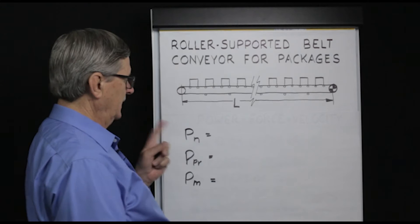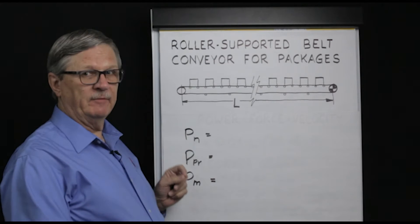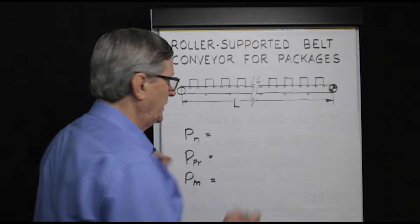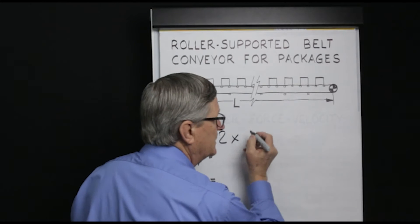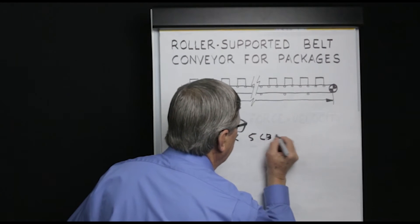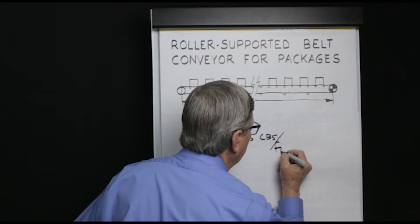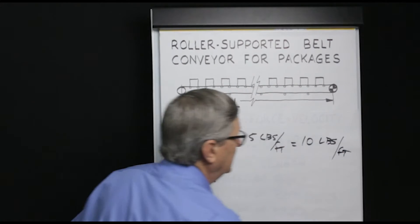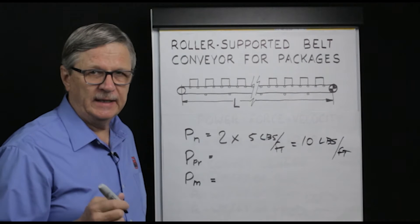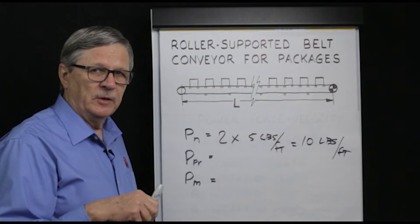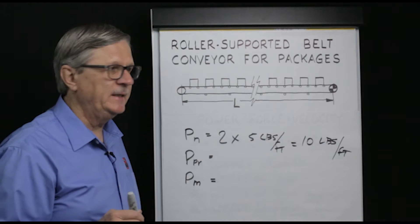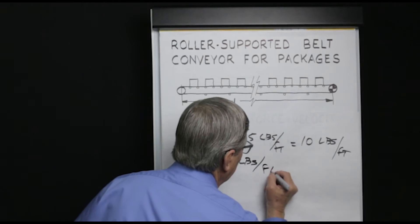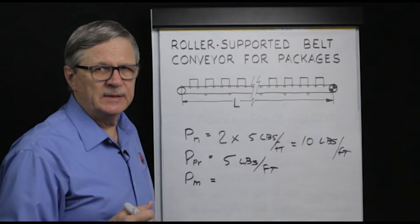PN is the weight per foot of the belt — a handy number would be 5 pounds per foot of belt. The equation calls for 2 times the weight per foot of the belt, so that's 2 times 5 pounds per foot, or 10 pounds per foot. Next, for the weight per foot of the rotating parts PPR, if we don't know the brand, a good simplifying assumption would be 5 pounds per foot. If your roller is particularly long or thick-walled, you'd need to adjust that number.